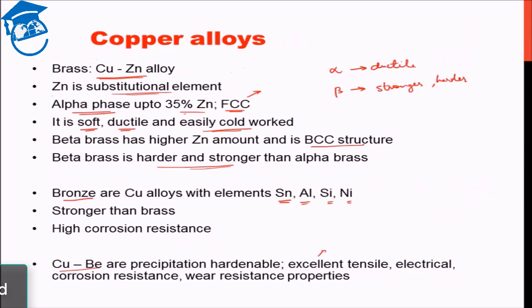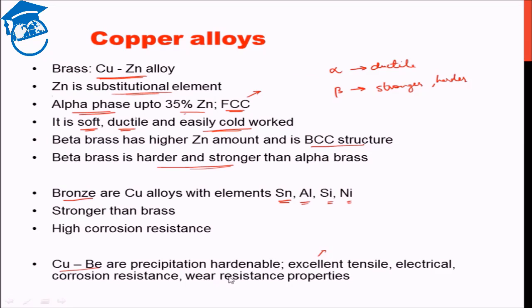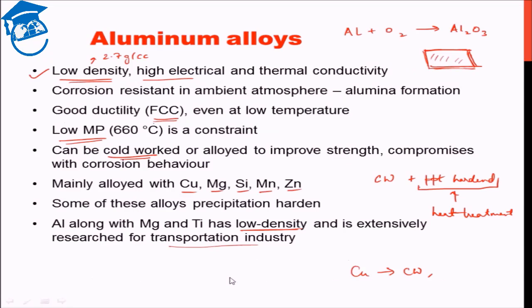To recap: we discussed copper — the fact that it is not heat treatable but can be cold worked or solid solution hardened — then we discussed brass and bronze, and finally aluminium, its low density property, and the fact that it can be cold worked as well as heat treated in the form of precipitation hardening. We will see several of the other non-ferrous alloys in the next class. Till then, have a great day. Goodbye.